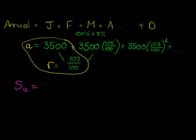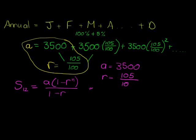So let's do our stock-taking. What do I have? I've got my first term is 3,500, I've got my constant ratio is 105%, and I've got my n, the number of terms, is going to be 12 terms.